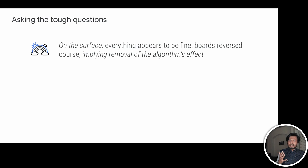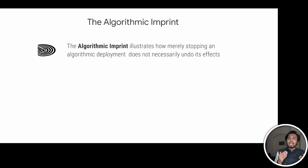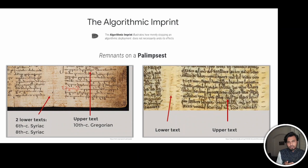Coming back to the events: on the surface, it appears that everything went well. The protests led to the boards reversing course, implying the removal of the algorithm's effect. But this is where our paper kicks in and asks the critical question — was that really the case? Did the removal of the algorithmic standardization undo its effect? We don't think so. And to help with our argument, we introduce the concept called the algorithmic imprint, to illustrate how merely stopping an algorithmic deployment does not necessarily undo its effect.